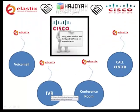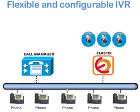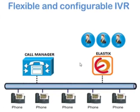IVR. Same as voicemail — if you want to activate IVR with Cisco Call Manager, you need a Unity Express device. But after integrating Cisco Call Manager with Elastisk, Elastisk will work as a flexible and customizable IVR for Call Manager.